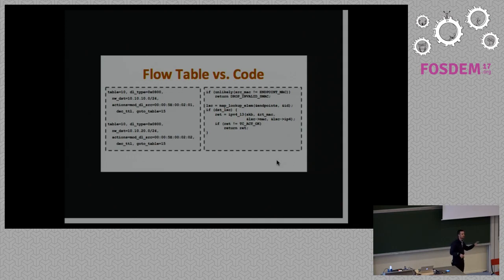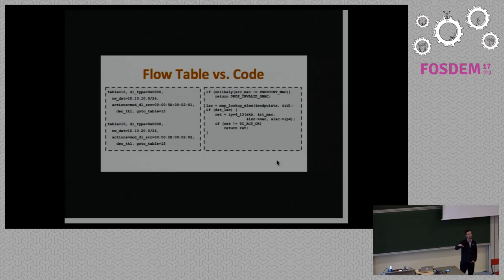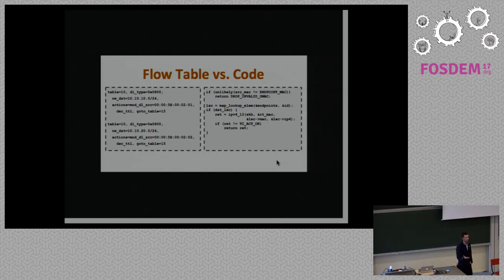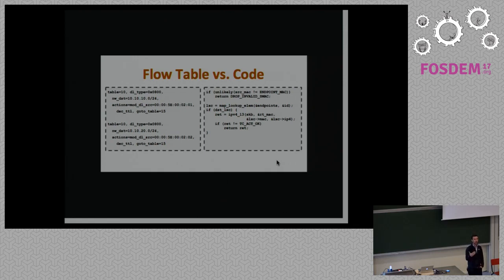This slide shows an example. On the left you can see a flow table — an OVS flow table example — with either fixed static flows or wildcard flows describing a packet or set of packets, and a set of actions executed for that flow. On the right is the opposite: a program that defines behavior for every packet flowing through it. The example shows the if statement that enforces every MAC address must be the container's MAC, otherwise it cannot leave. A second part does an L3 lookup through a hash table and performs an L3 action.